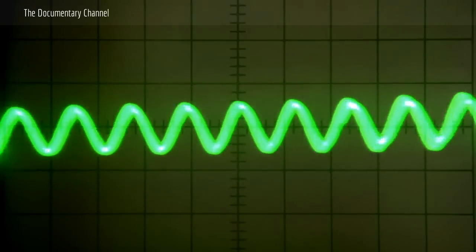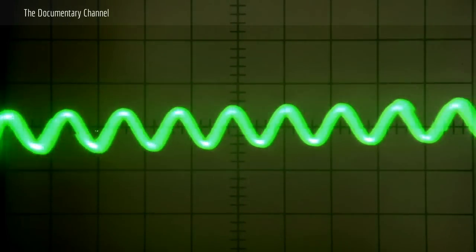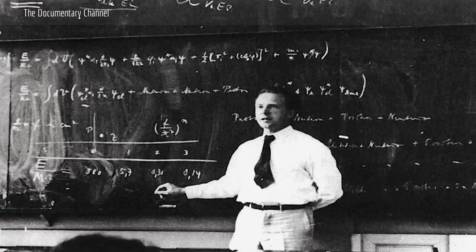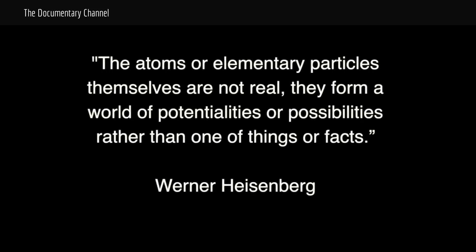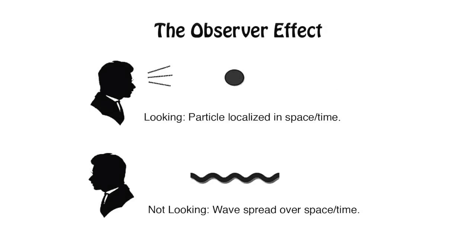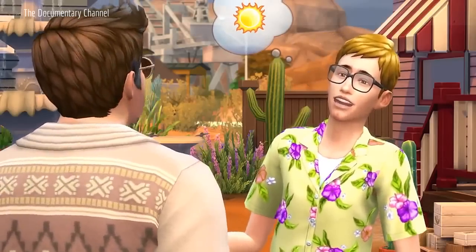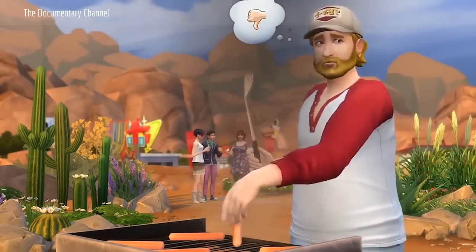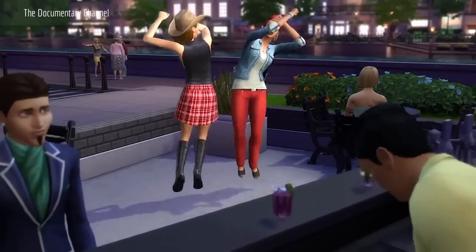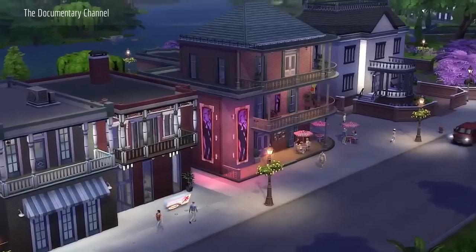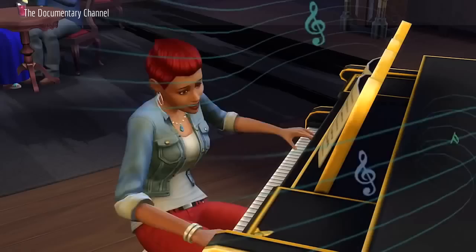This is what Werner Heisenberg said many years ago: 'The atoms or elementary particles themselves are not real. They form a world of potentialities or possibilities rather than one of things or facts. When you look, they appear. When you're not looking, they don't necessarily exist.' This situation seems very odd until you compare it to what you see in a computer simulation. A video game gives you the frame that you need when you're looking there — when you navigate around and look at something else, it creates and gives you that frame. Oddly enough, the universe behaves the same way. Our world really does seem to be pixelated, and it only assumes definite form when observed — the very same way computer simulations behave. This is why the simulation hypothesis is now taken seriously by an increasing number of experts.